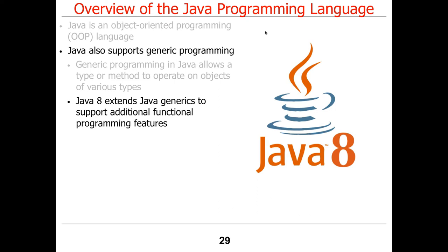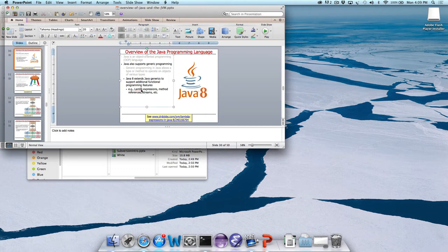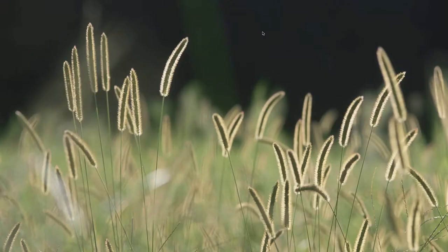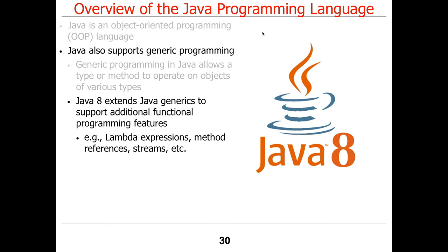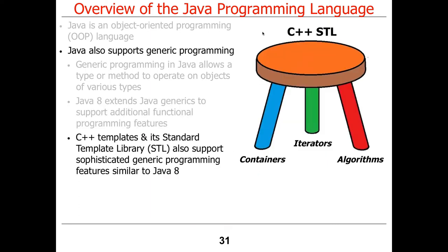Java has had generics for quite a long time. Java 8, the new version that came out recently, goes even further and adds a pile of new functional programming features. Lambda expressions are basically syntactic sugar that removes all the boilerplate code except for the actual logic you want to run, and you can pass these things around as first-class entities. Lambda expressions, method references, and something called streams — we'll cover them probably next Monday.